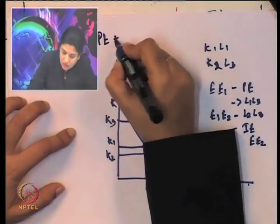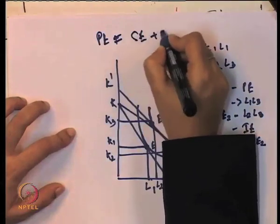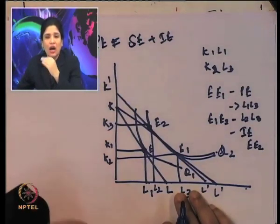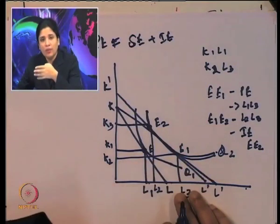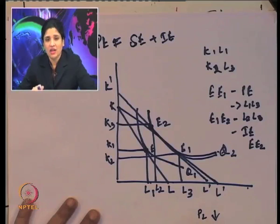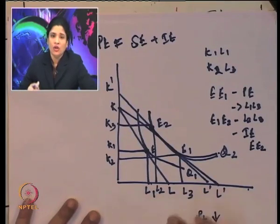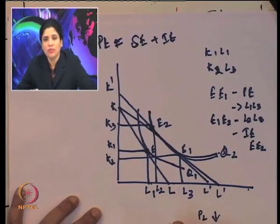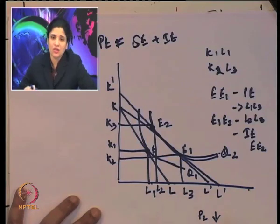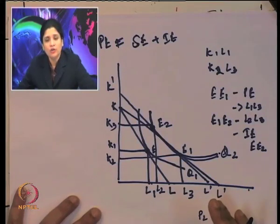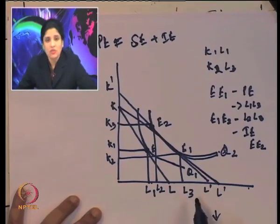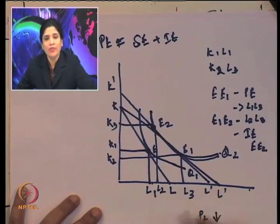The price effect is the combination of the substitution effect and the income effect. This is analogous to the price effect, substitution effect, and income effect in consumer theory — it is the counterpart in production theory, addressing changes in input prices. If there is a change in input prices, the producer substitutes toward the cheaper input, using more of it, leading to a change in input combination and level of output.